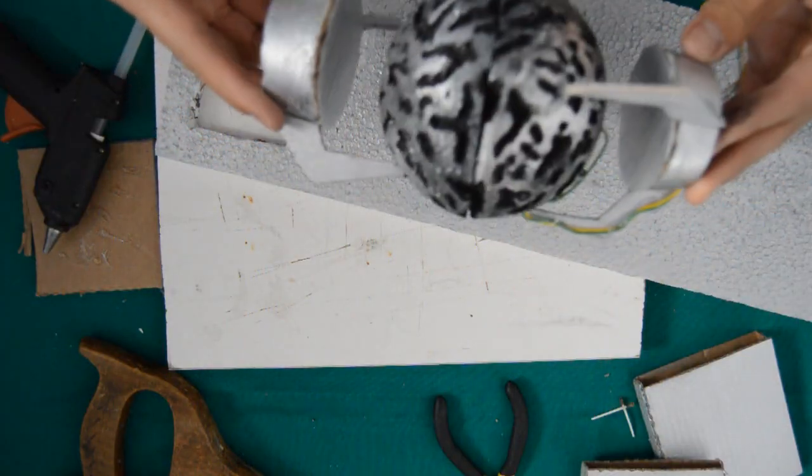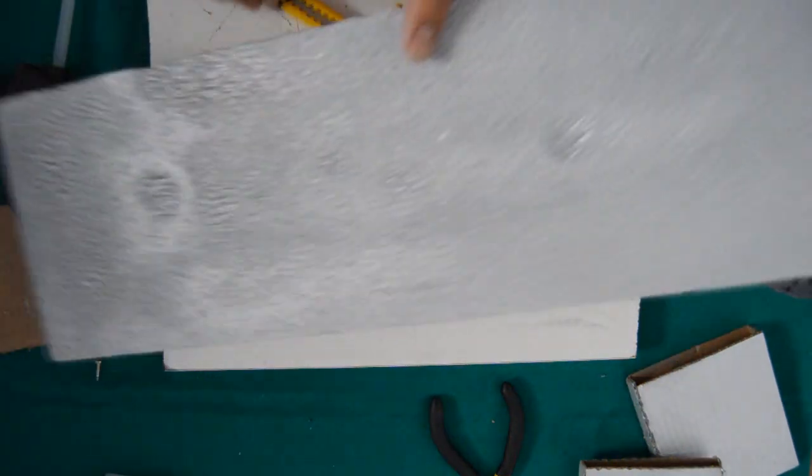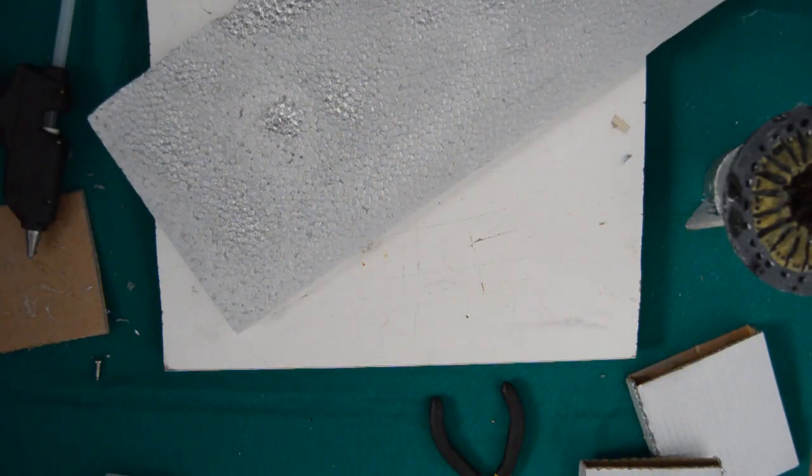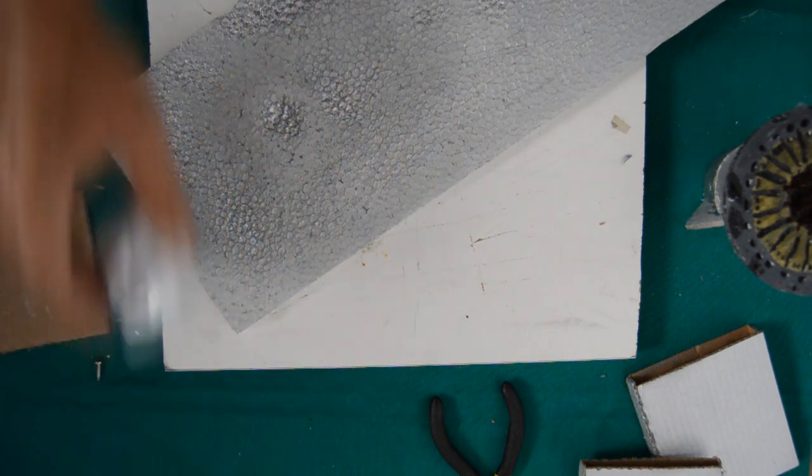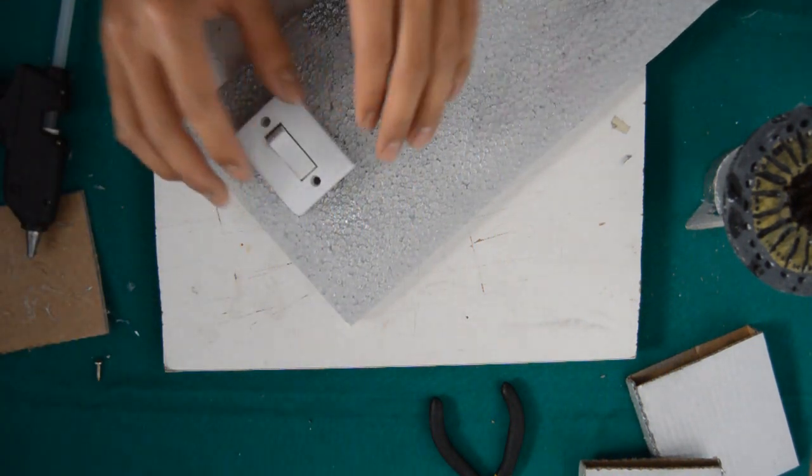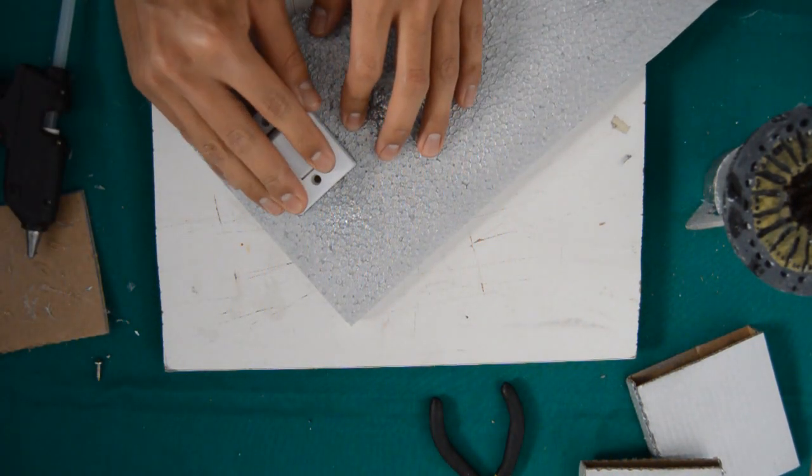Este cable lo vamos a ir doblando. Le podemos poner unos puntos con silicona. Y el objetivo es ocultar el cable. Aquí tenemos el orbe. Ok, entonces vamos a volver a trabajar en la placa. Y vamos a hacer un agujero.